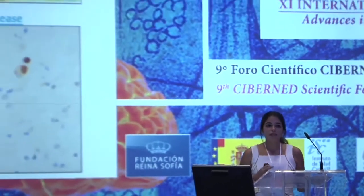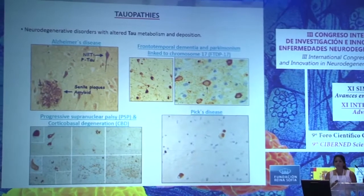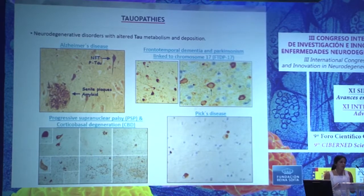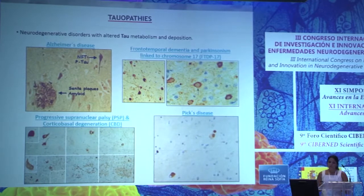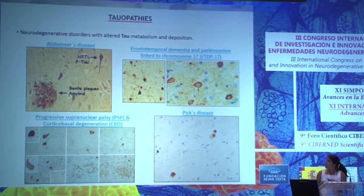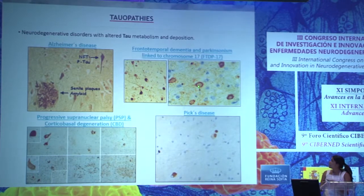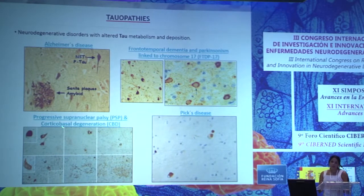Tauopathies are a group of neurodegenerative disorders caused by an altered metabolism of the microtubule-associated protein tau. They are characterized by the presence of tau deposits inside affected neurons. In the most prevalent tauopathy, Alzheimer's disease, there are extracellular deposits of beta-amyloid but also neurofibrillary tangles formed by tau. In other tauopathies we can also see neurofibrillary tangles, tau in form of perinuclear rings, tau inside glial cells, or in form of inclusions.